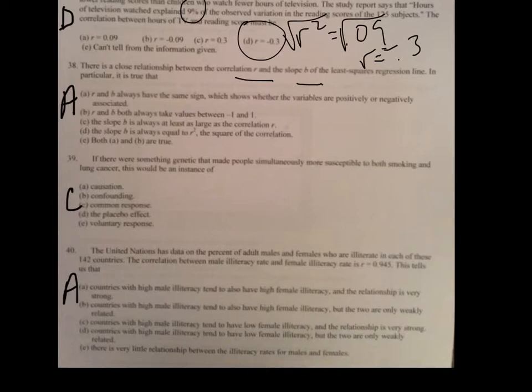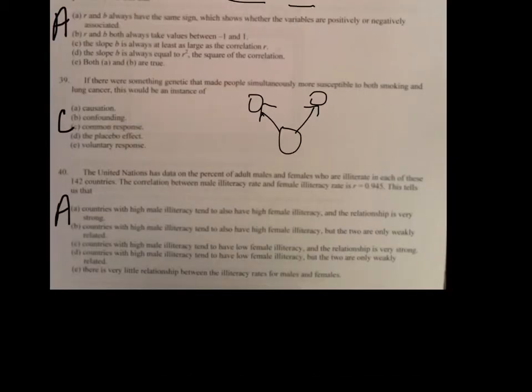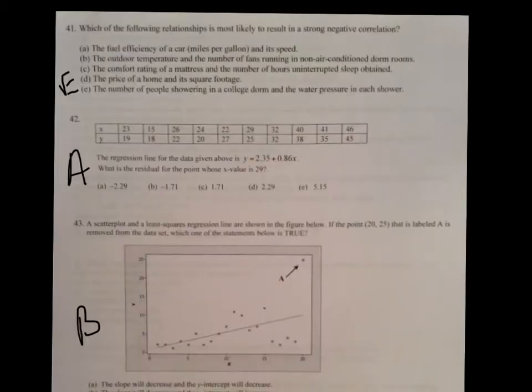On number 39, if there is something genetic that made people simultaneously more susceptible to both smoking and lung cancer, this would be an instance of common response. Remember, you have an effect of both of these. Now, on number 40, we're talking about a correlation of 0.945. That's a very strong positive correlation. What that means is, if males are illiterate, that means the females also tend to be illiterate. And the relationship is very high. That is why A is the answer. On number 41, it's asking for a very strong negative correlation. Well, a number of people showering in a college dorm and the water pressure, the more people there are, the less water pressure there's going to be.